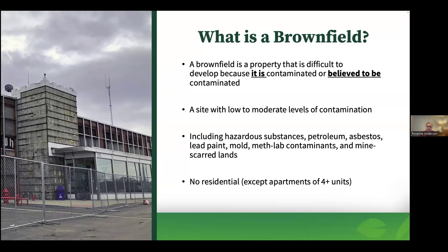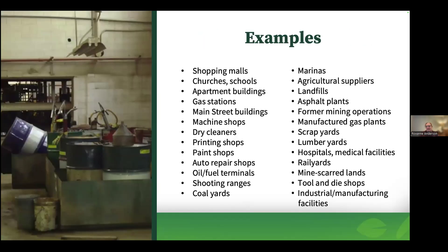A Brownfield is essentially a property that either has the perception of being contaminated or is contaminated. Because it follows that broad definition, it can be almost anything. Contaminations can include hazardous substances like petroleum, lead paint, and asbestos that might be in an old building or an old gas station. Examples include marinas and shooting ranges that you might not expect. Almost every community has a Brownfield or multiple, and a lot of them are underdeveloped because it's a very big challenge to get them cleaned up.